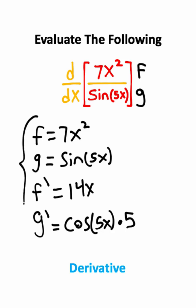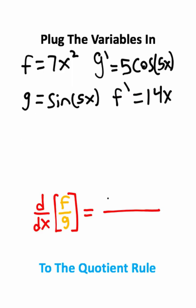So now that we have all the derivatives evaluated, we can use the quotient rule. The quotient rule looks like this. It's going to be f prime g minus g prime f, all divided by g squared.